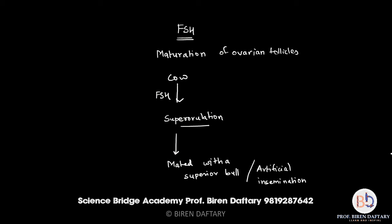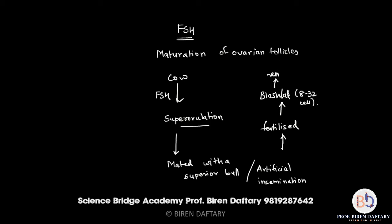Because of super ovulation, the large number of released ova get fertilized, and zygotes are formed. Each zygote undergoes cleavage to form a morula, then a blastula. When that blastula is at the 8 to 32 cell stage, it is removed from the female.